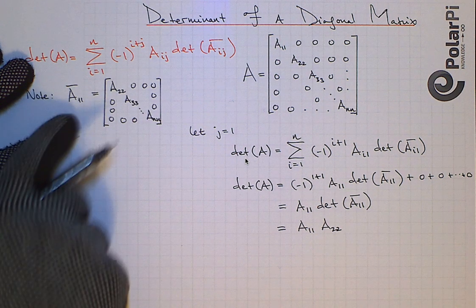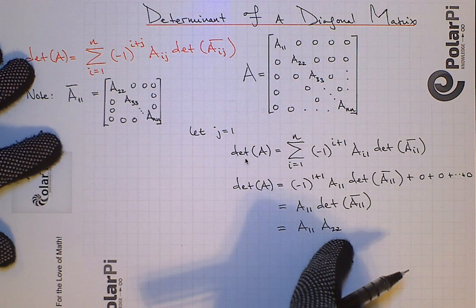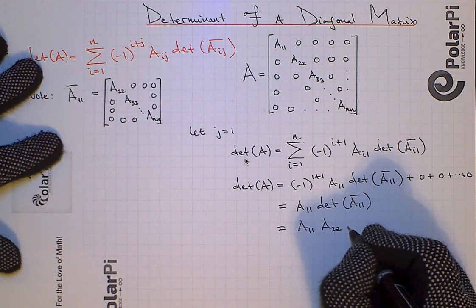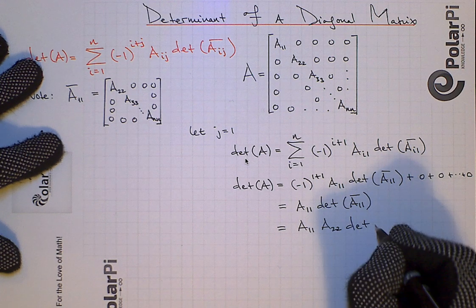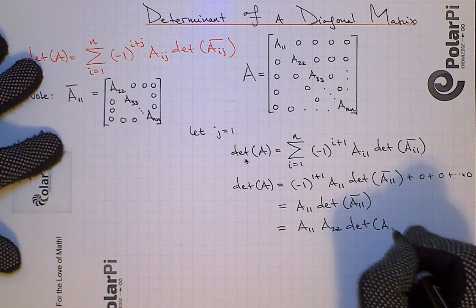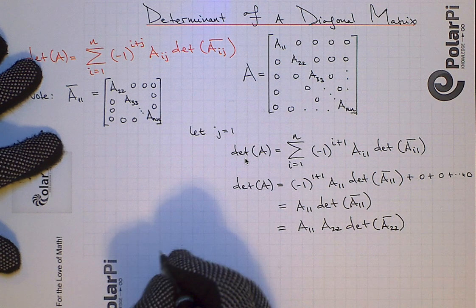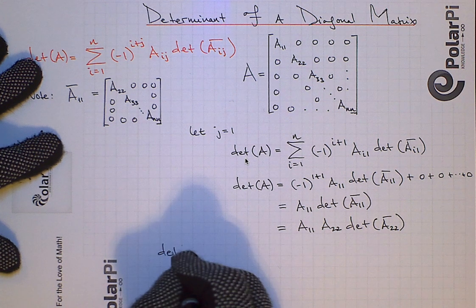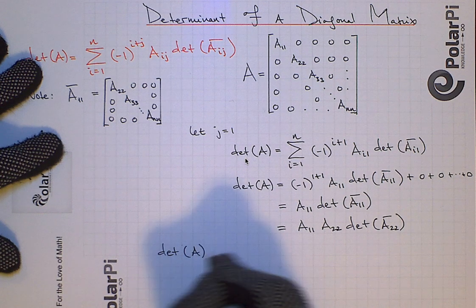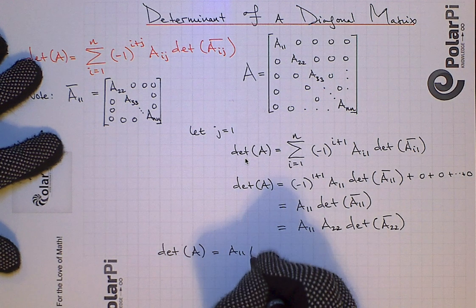So yeah, basically, we're mimicking what we did over here. So we're gonna write A22, and then it's gonna be times the determinant of, you guessed it, it's gonna be the determinant of A22 bar. And so this is gonna continue to happen. So we can write det A is going to equal A11, A22,